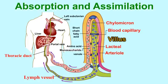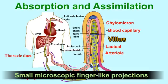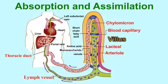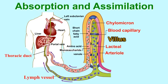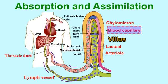The villi are small microscopic finger-like projections. Each villus is an absorbing unit consisting of a lacteal duct in the middle, surrounded by a fine network of blood capillaries.